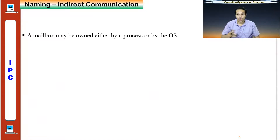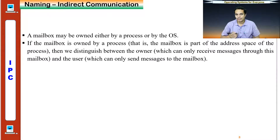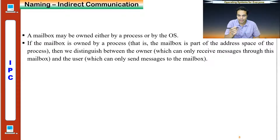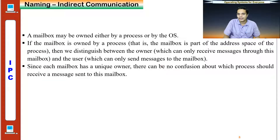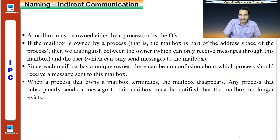A mailbox may be owned either by a process or by the operating system. If the mailbox is owned by a process, it is part of that process's address space, making it easy to distinguish between the owner and the user. Since each mailbox has a unique owner, there is no confusion about which process should receive a message sent to that mailbox. When a process that owns a mailbox terminates, the mailbox disappears automatically, and any process that subsequently sends a message to it must be notified.